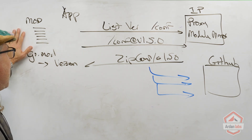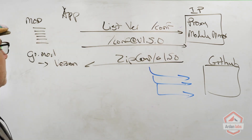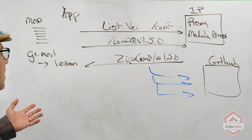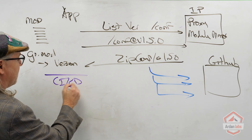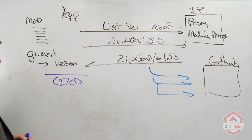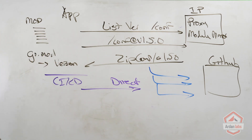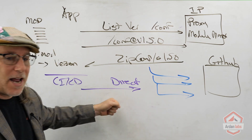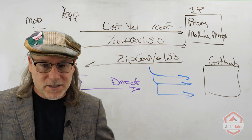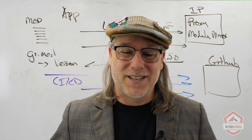The first time I pulled down this code, let's say I went to the proxy server — no big deal. But now I'm in a CI/CD environment and I decide to go direct. If I go direct, what are the chances that when I ask for version 1.5.0 of comp directly from GitHub I get the exact same code back? They're pretty good — but they're not absolute.